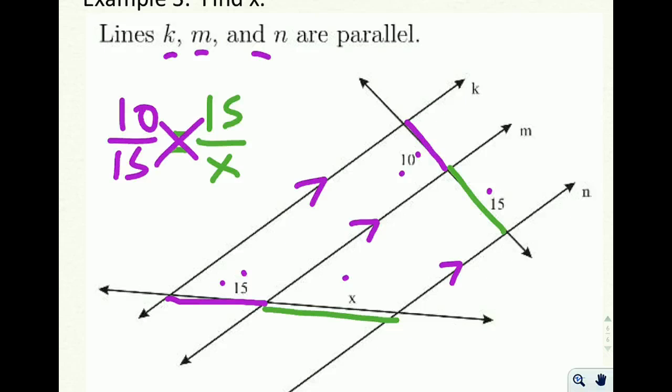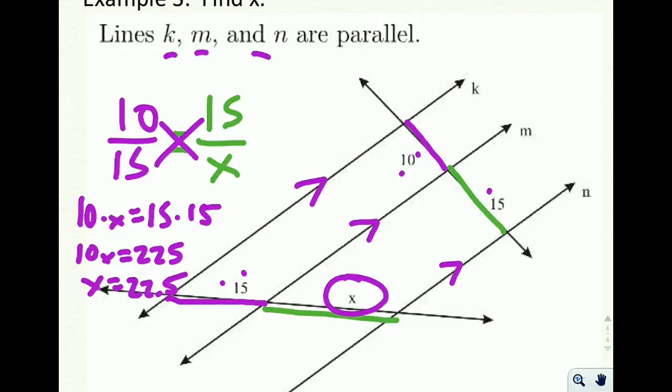To solve, as always, cross, multiply, divide. 10 times x equals 15 times 15. So we have 10x equals 225. And then divide both sides by 10, and x equals 22.5. Seems reasonable. We got bigger going from top to bottom. We're going to get bigger going from top to bottom. One and a half times bigger. So 22.5 makes sense.